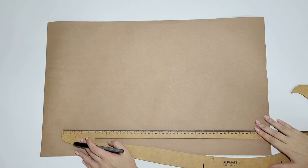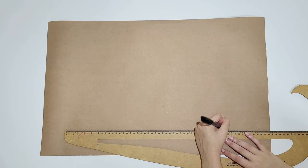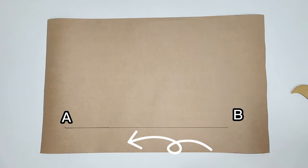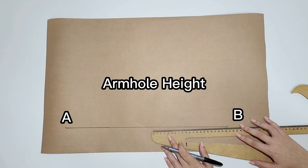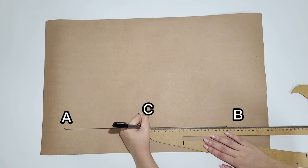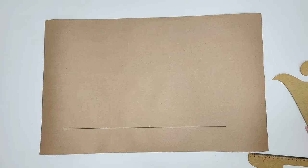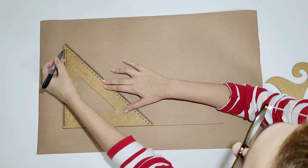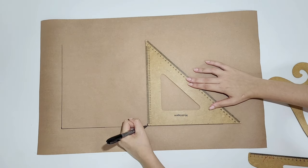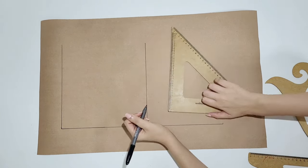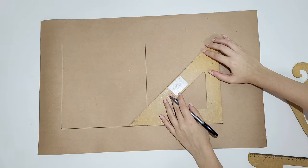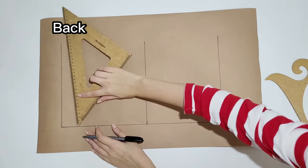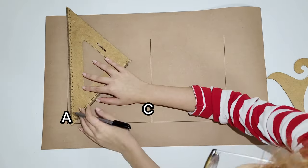Start by drawing a straight line with the same number as the total bodice length we got. Then, from B to A, mark the armhole height we calculated. Now draw a line to the right on all those 3 points. If you don't have a ruler with a 90 degree angle, you can use a notebook to aid you. Now mark the back measurement we got on point A and on point C and connect the dots.